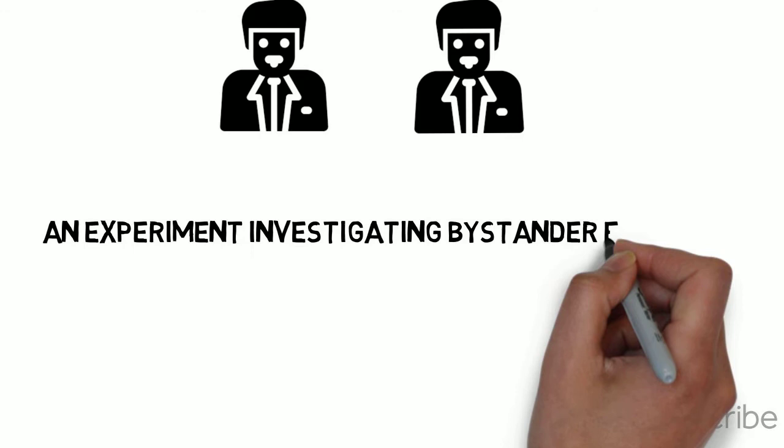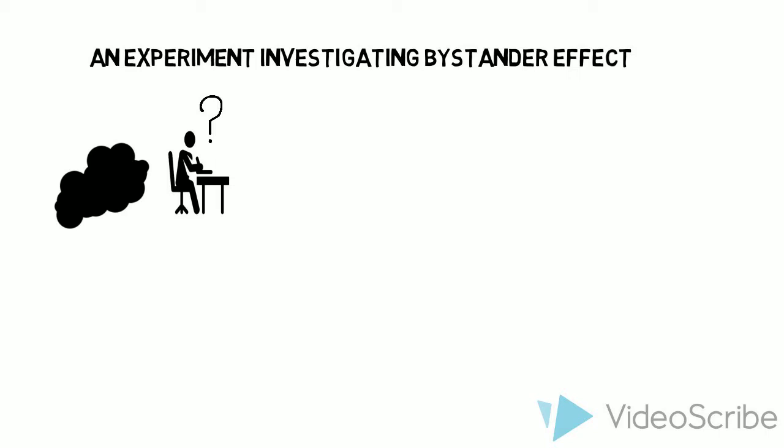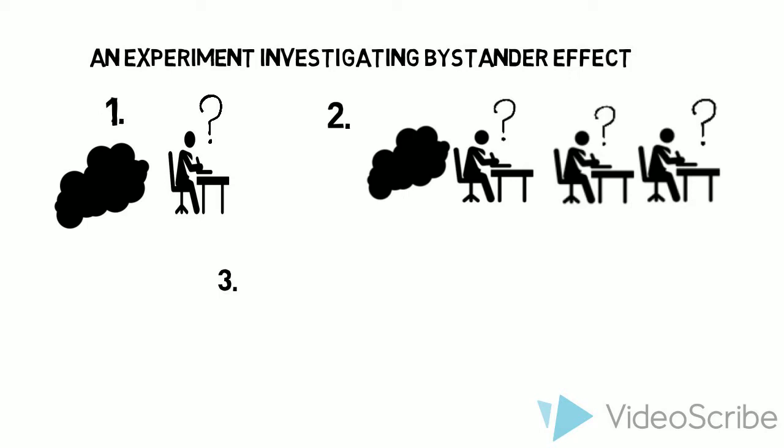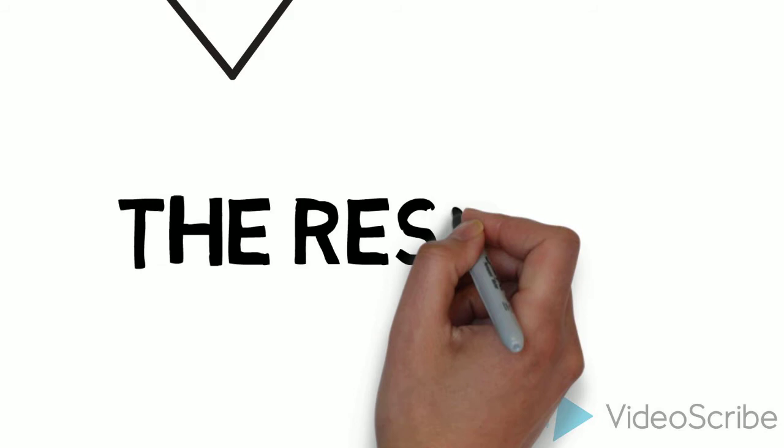One of the experiments that they have done is the smoke filled room experiment. They had subjects begin to fill out questionnaires in a room to which they began to add smoke. In the first condition, the subject was alone. In the second condition, three naive subjects were in the room. In the third condition, they have one naive subject and two confederates who purposely noticed and then ignored the smoke.